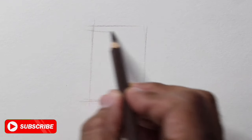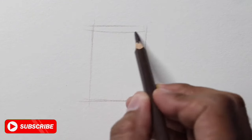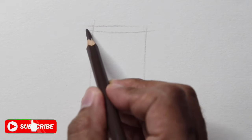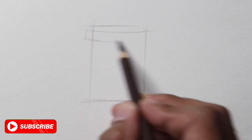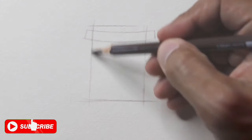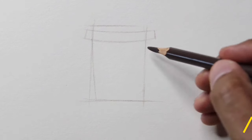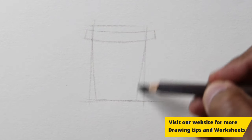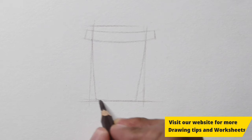Next, draw two curved lines at the top to outline the upper part of a coffee cup. Extend two lines along the edges of the rectangle to form the sides of the cup. Add a curved line for the bottom part of the cup.